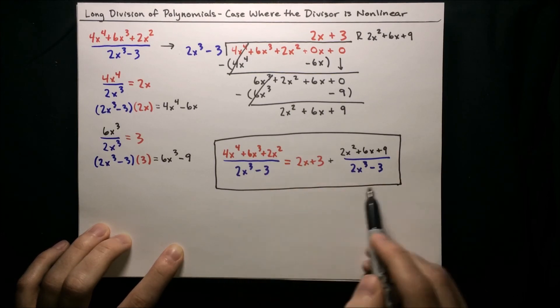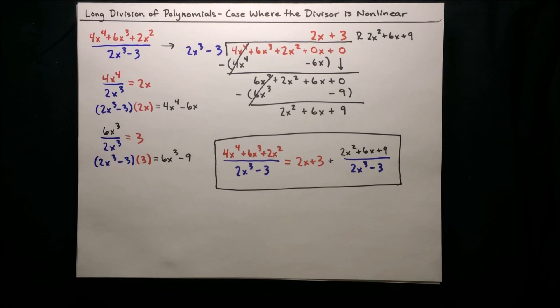The only constraint that must be satisfied is the degree of the remainder has to be smaller than the degree of the divisor. The remainder can contain more terms than the divisor — like here the remainder has 3 terms while the divisor only has 2 — but the remainder's degree of 2 is smaller than the divisor's degree of 3. In the future, we'll learn a faster way to do polynomial division in the case of a linear factor, which is called synthetic division.